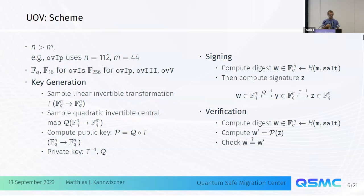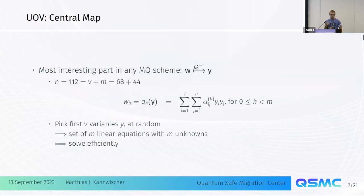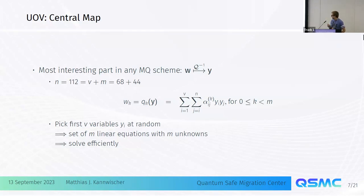The interesting part is the central map Q. Oil and Vinegar constructs it using vinegar variables and oil variables. Vinegar variables are mixed with all other variables, but oil variables are only mixed with vinegar variables. To sample a pre-image, we pick the vinegar variables at random, which gives a set of linear equations we can solve using Gaussian elimination.